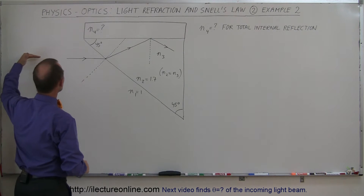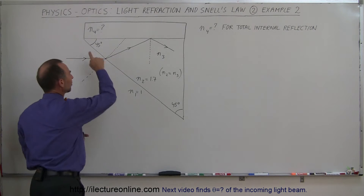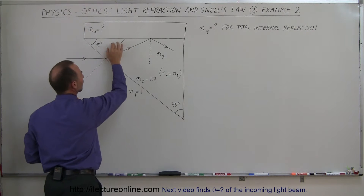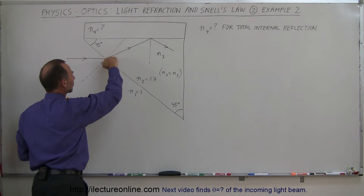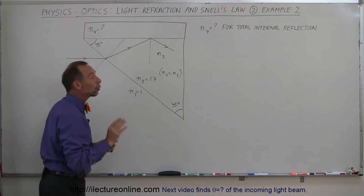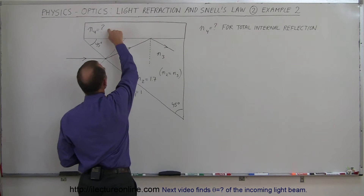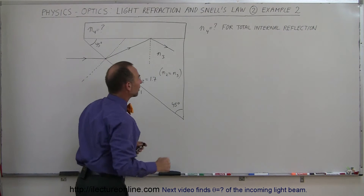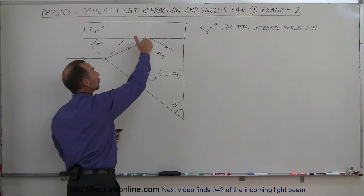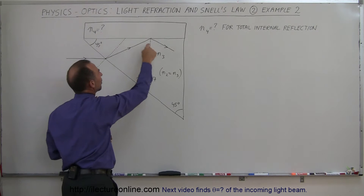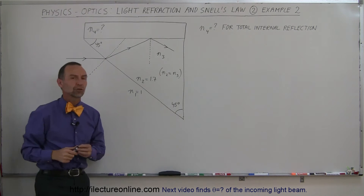The question is: if you send a beam of light in a horizontal path towards this piece of glass — and notice the shape of the piece of glass has a 45-45-90 degree angle — it will refract across the boundary, hit the other boundary, and the question is: will it go across the boundary into this other material, or will it be totally reflected? That's total internal reflection.